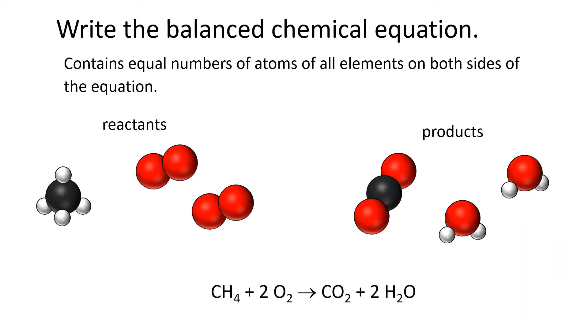When you are instructed to write a balanced chemical equation, what balanced means is that we have the same number of atoms of all of the elements on both the left side of the arrow and the right side of the arrow. The left side of the arrow refers to reactants. The right side of the arrow refers to products. So typically speaking, the reactants are the things that you mix together to start the reaction, and the products are the things that are made by the chemical reaction.